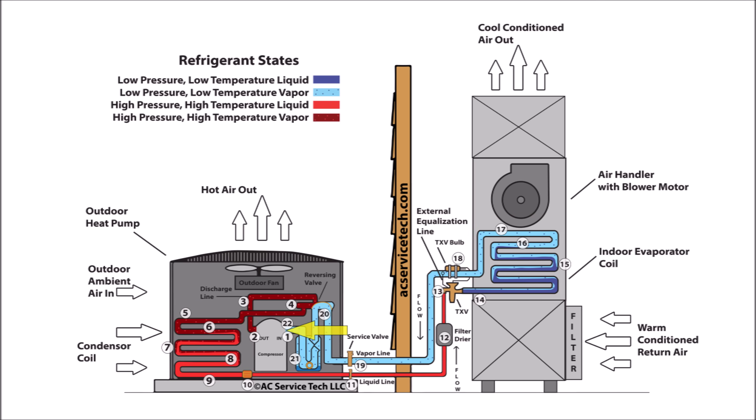At step one, you have the low pressure, low temperature, superheated vapor entering the vapor compressor. Then at step two, the high pressure, high temperature, superheated vapor exits the compressor. For the refrigerant, anytime the pressure increases, temperature increases — likewise, anytime temperature increases, pressure increases. So what's happening is the compressor is increasing the vapor pressure in order to increase its temperature.